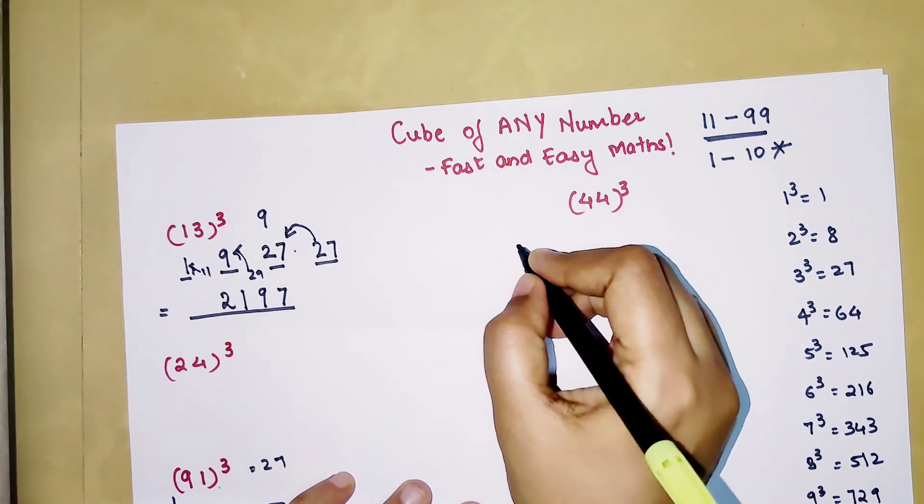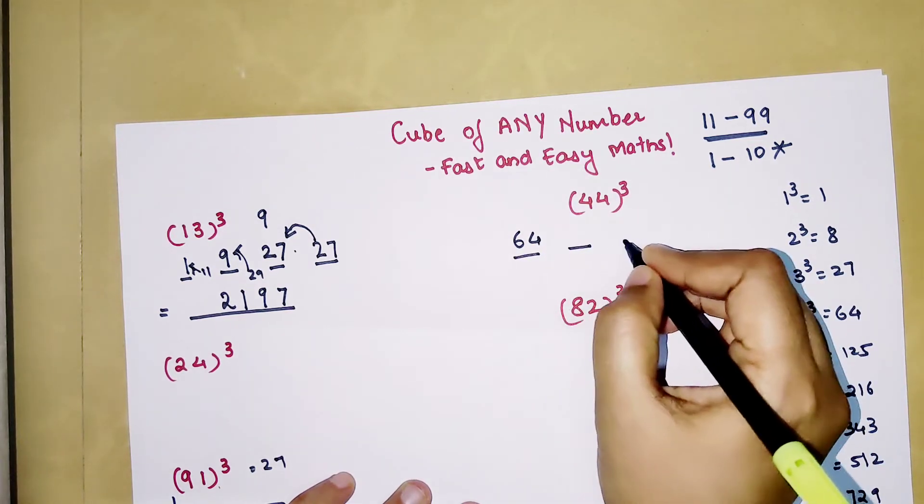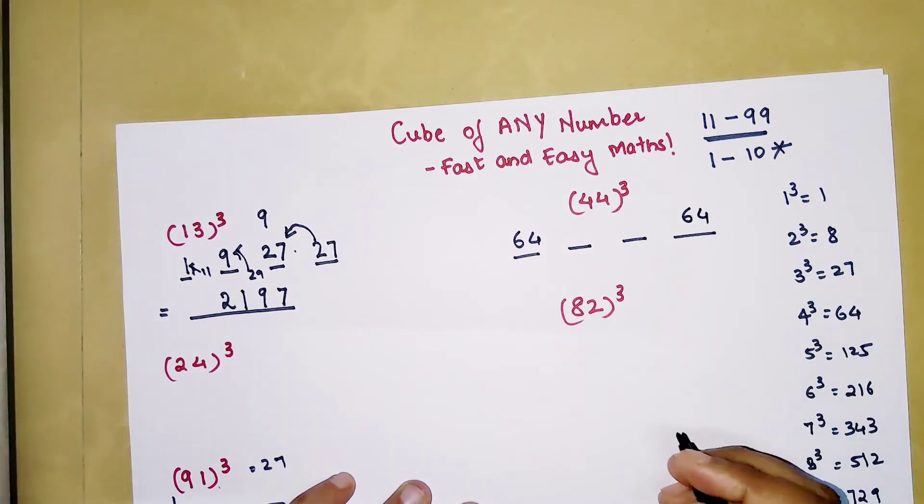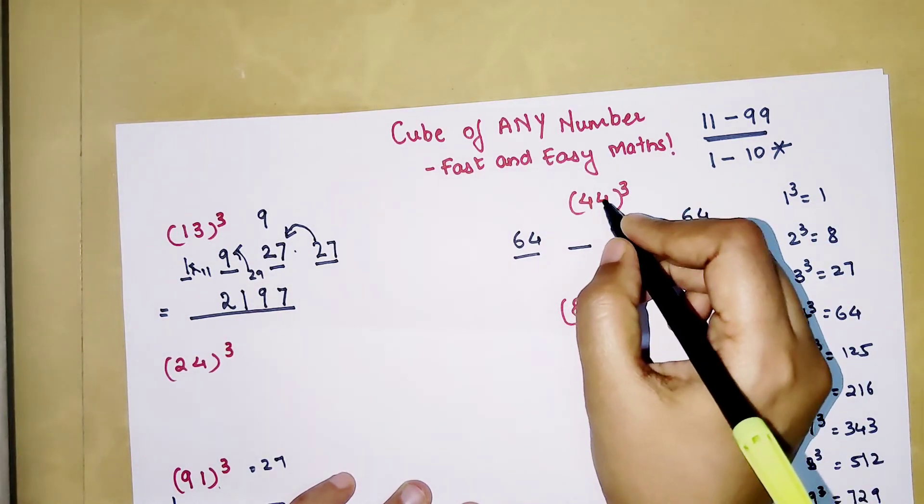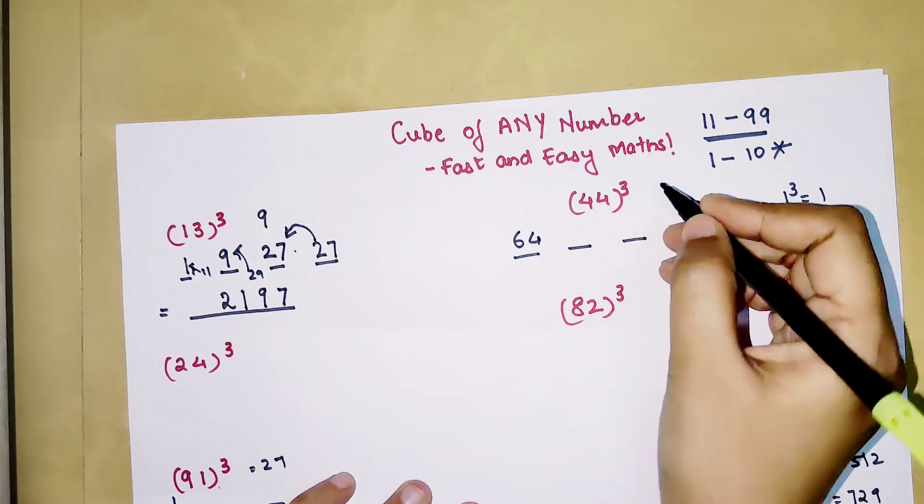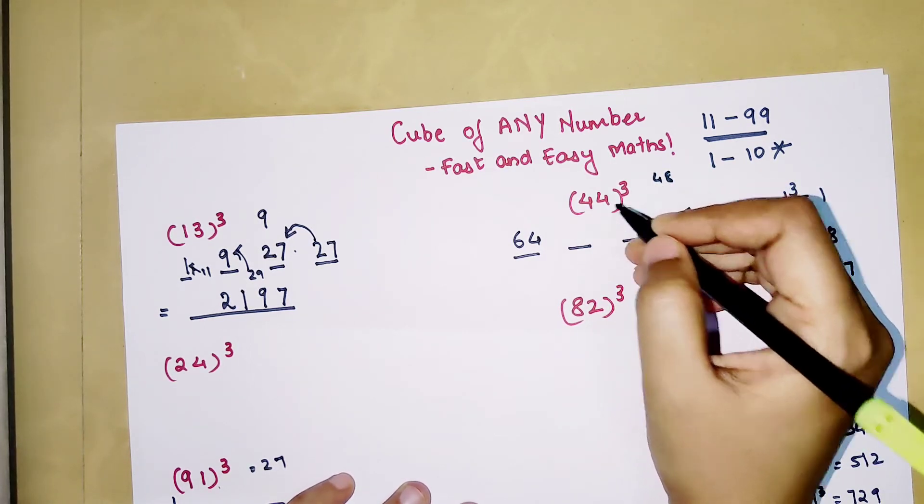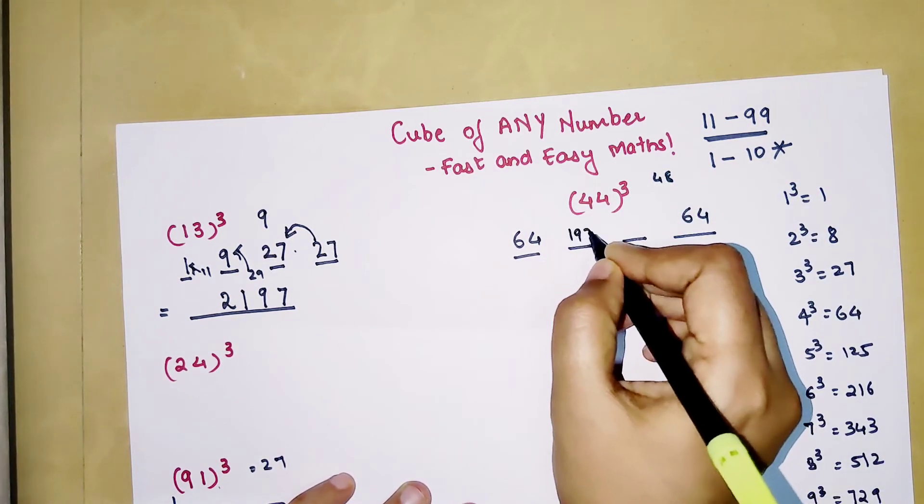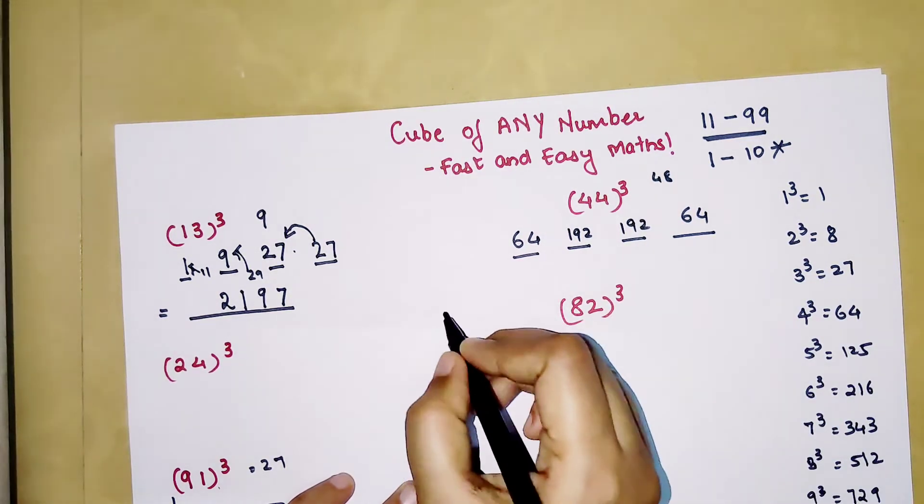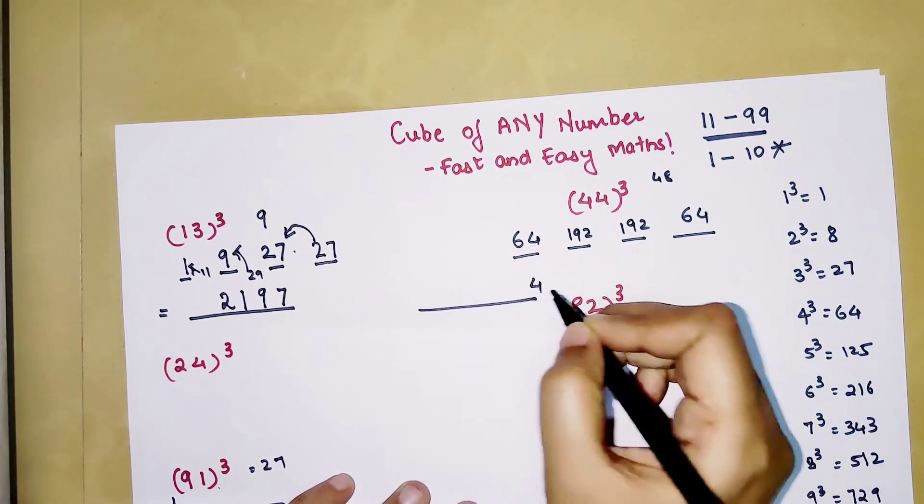So 44 cube. In this case we will do 4 cube written, then 2 dashes, then the last digit cube which is again 4. So we will write 64 here also. Then what you get over here is 4 into 4 which is 16 into 3 is going to get you 48. Now 48 when multiplied by 4 again will get you 192 and 192. So 4 will be taken over here.